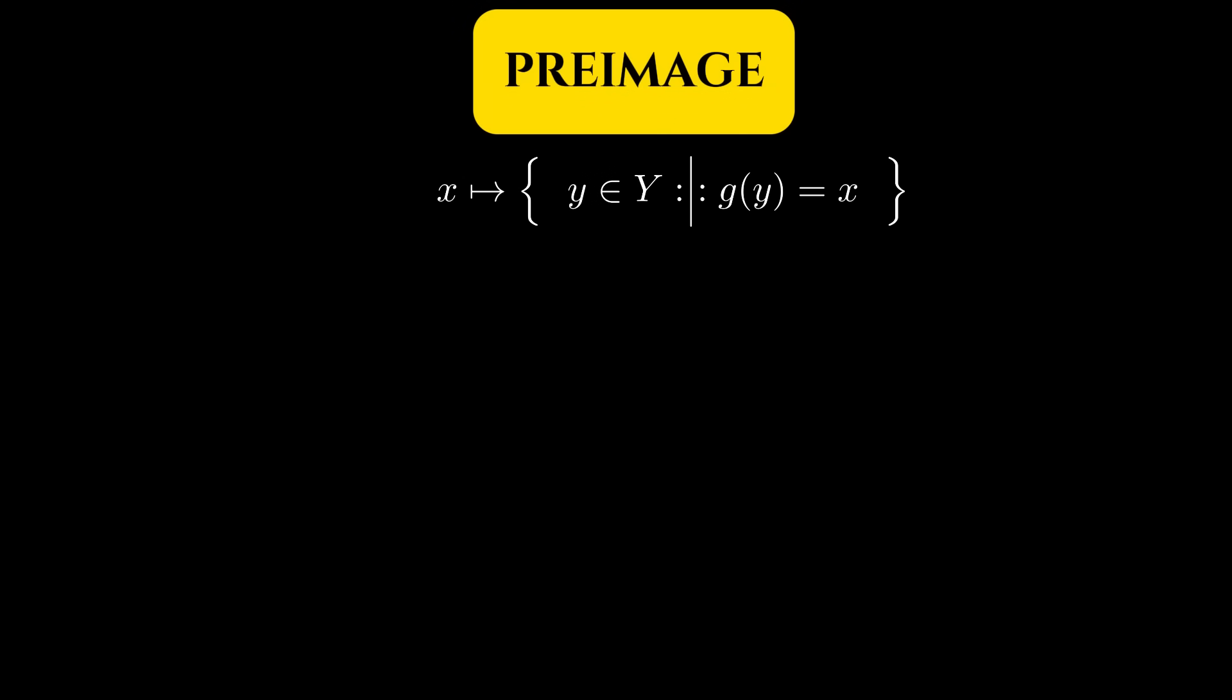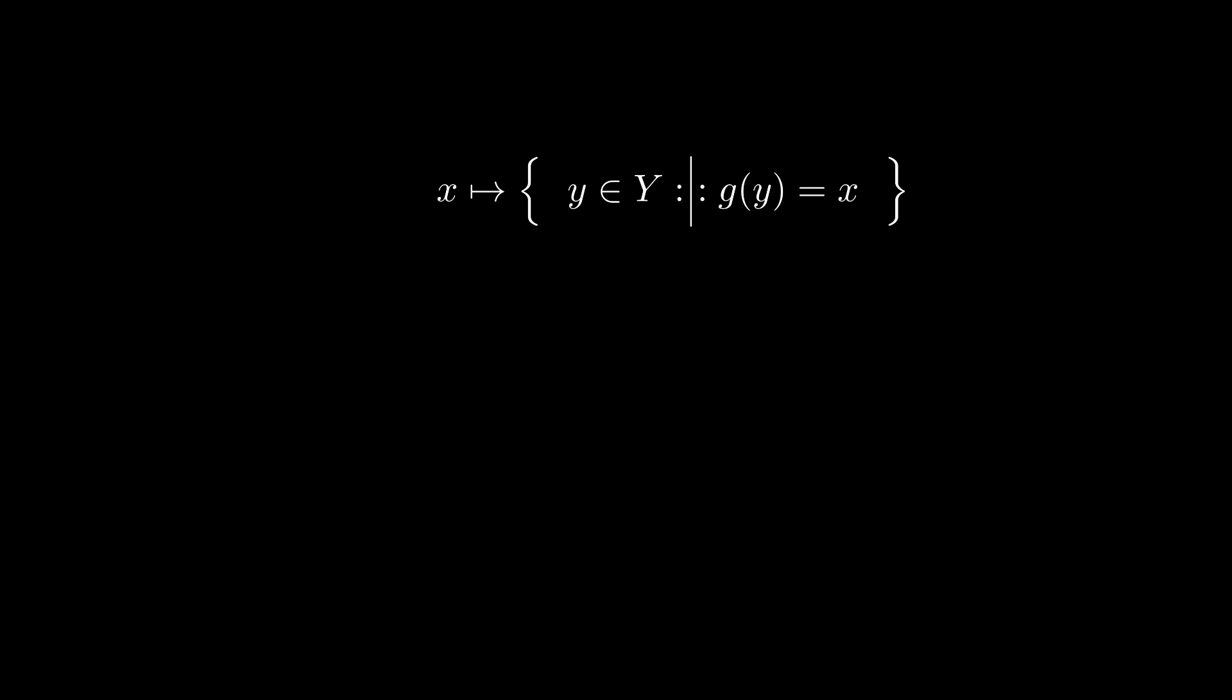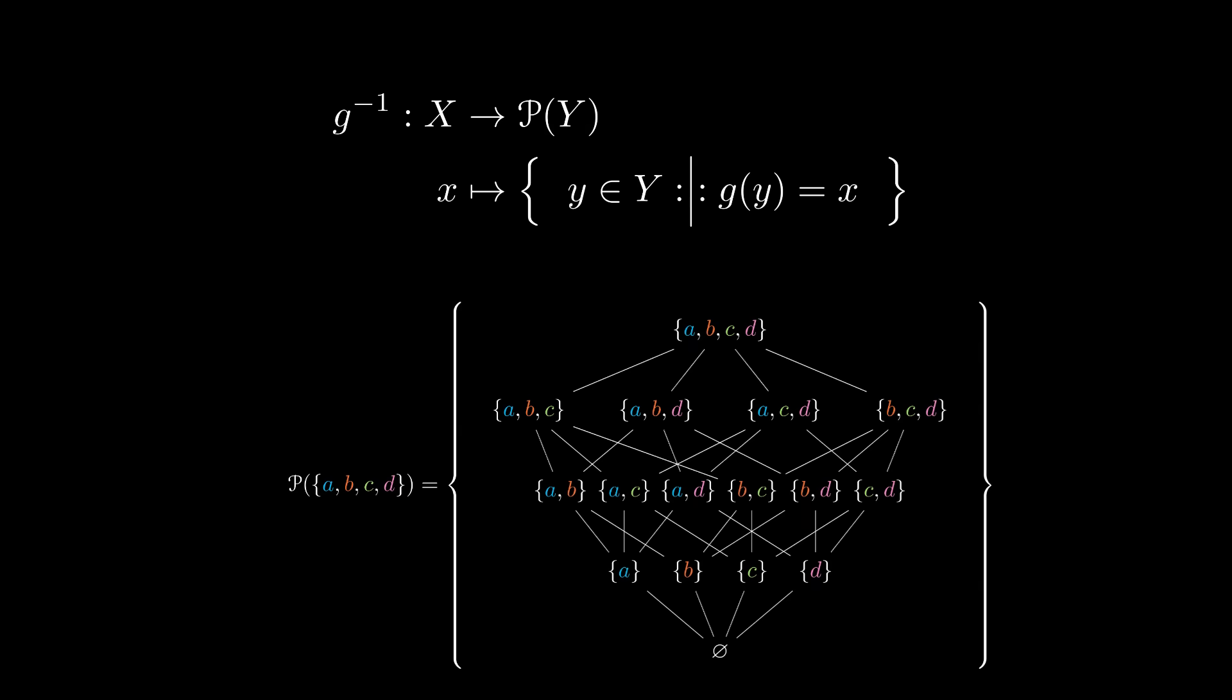To remedy these, we could instead send an element X to the set of all Y that G maps to X. This is called the preimage of X under G. This is a perfectly well-defined function. However, the issue now is that the preimage of G doesn't map X to Y. Rather, it maps X to the set of subsets of Y, also known as the power set of Y. But why is this really a problem?